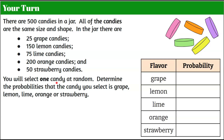Now it's your turn. You are given that there are 500 candies in a jar. All of the candies are the same size and shape. In the jar, there are 25 grape candies, 150 lemon candies, 75 lime candies, 200 orange candies, and 50 strawberry candies. You're going to select one piece of candy at random and determine the probabilities that the candy you select is grape, lemon, lime, orange, or strawberry. Go ahead and pause and then come back when you're ready to check your work.